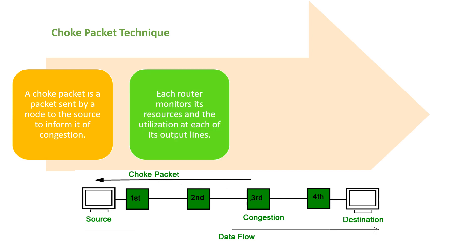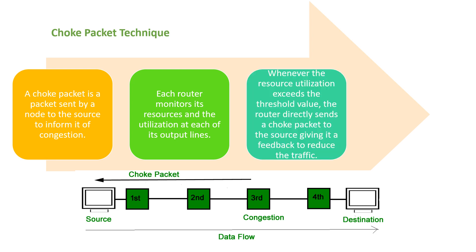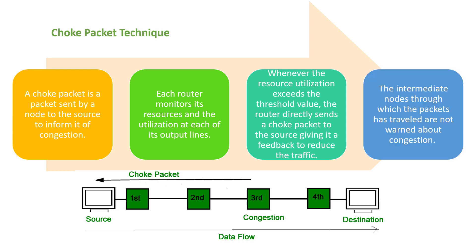The next technique is the choke packet technique. Here, a choke packet is sent by the congested node directly to the source to inform it of the congestion. Each router monitors its resources and utilization at each of its output lines. Whenever the resource utilization exceeds the threshold value, the router sends a choke packet to the source, providing feedback to reduce the traffic. The intermediate nodes through which packets have traveled are also warned about the congestion.